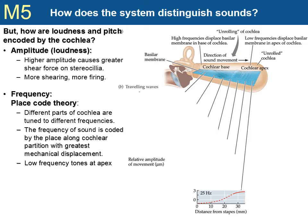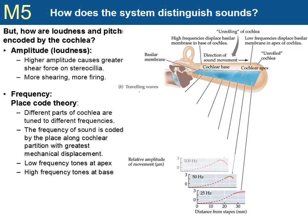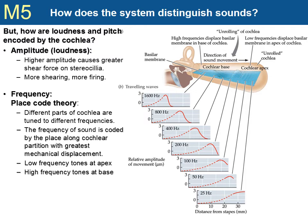Frequency is encoded in a different way. Different areas of the cochlea have hair cells that are tuned to different frequencies, so the frequency of a sound is coded by the place along the cochlear partition with the greatest activation. A 25 Hz bass tone displaces the cochlear partition maximally at about 32 mm from the oval window — near the cochlear apex. As sound frequency increases, maximal displacement occurs closer and closer to the cochlear base. High pitches are encoded by hair cells near the base of the cochlea, whereas low bass tones are encoded by hair cells near the cochlear apex.